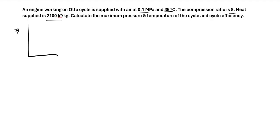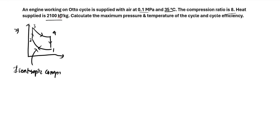If you draw the diagram for an ideal Otto cycle, you get a 1-2-3-4 cycle. The process 1 to 2 is an isentropic compression process. In the P-V diagram, the process 2 to 3 is the combustion or heat supply process — heat is supplied where the fuel is burned. Process 3 to 4 is where the engine does work, and 4 to 1 is where heat is rejected.